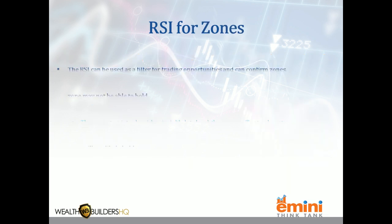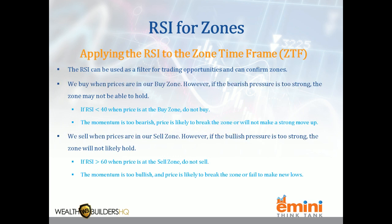Using the RSI as a decision support tool, it can be used as a filter. We want to buy when prices are in our buy zones below current price. What we don't want to see is lots of bearish pressure when coming into a buy zone. If the RSI is below 40, there's too much bearish momentum and that zone is less likely to hold — therefore you should not buy. If the RSI is anywhere above 40 — 41, 47, 60, 87, it doesn't matter — anything above 40 means you do not typically have enough bearish pressure to break through the zone, and buying is an okay strategy.